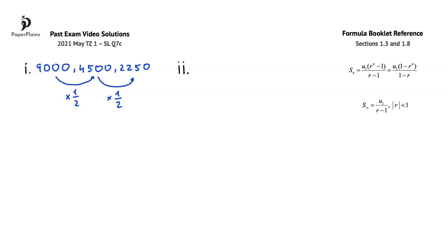In other words, we have a geometric sequence where the first term u1 is 9,000, and the common ratio r is one half. To show that the sum of the deposits will never reach $20,000, we'll use the sum of an infinite geometric sequence formula from Section 1.8 of the formula booklet. If we can show that the sum to infinity of this sequence is less than 20,000, then we will have managed to show what the question is asking for.